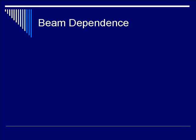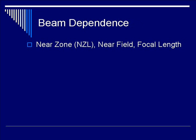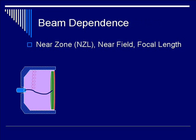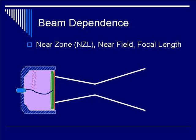Let's talk about beam dependence and see how the beam near zone length and the angle of divergence relates to frequency and transducer diameter. We'll talk about near zone length, NZL, also known as near field length. Here is the transducer turned sideways. It has a beam profile shaped like an hourglass, consisting of a near field and a far field. The near field component emanates from the transducer surface to the minimum beam width; the far field is beyond that.